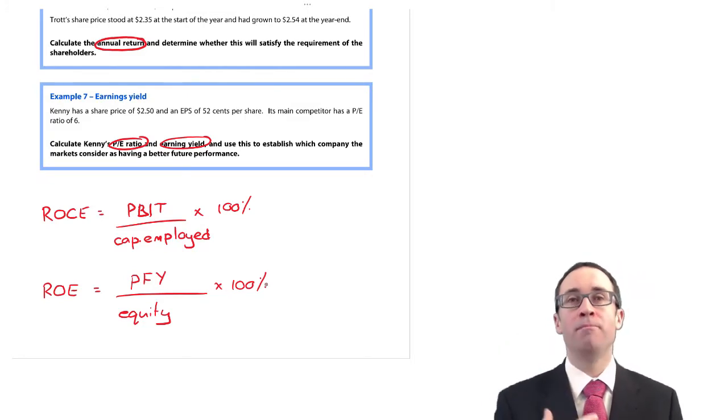That's why we then start looking at your return on equity, because that looks at the return that the equity holders themselves get, just the shareholders. What do they get as a return? When they're getting their return, they get their dividends out of the company's profits for the year. So what we take there is not your profits before interest and tax, but your profits for the year.